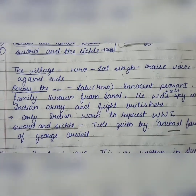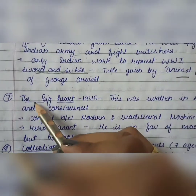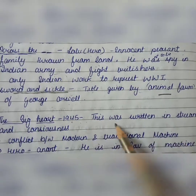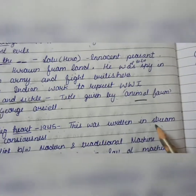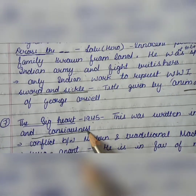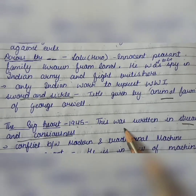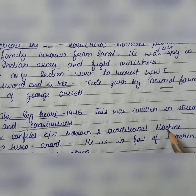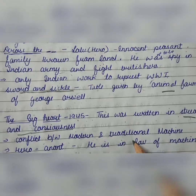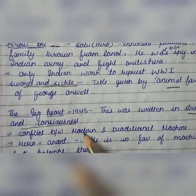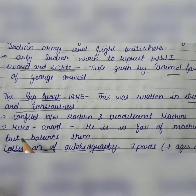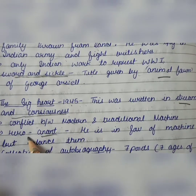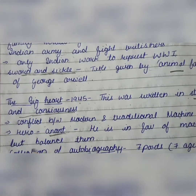The Big Heart was published in 1945 and was written in the stream of consciousness technique — very, very important. It deals with a conflict between modern and traditional machines, a tug of war over which is better. The hero is Anant, who is in favor of machines, but one must balance both pros and cons.